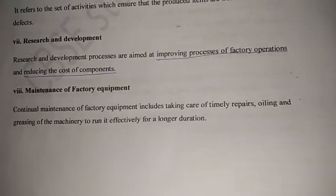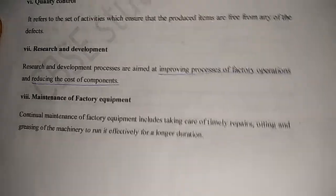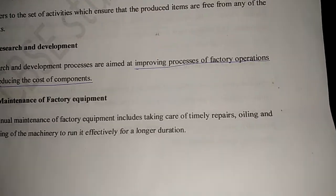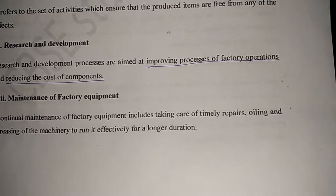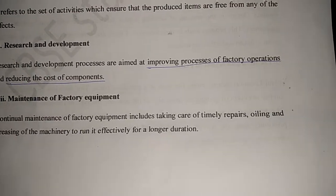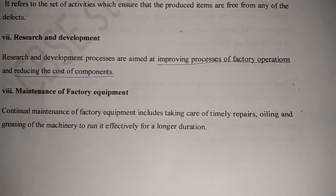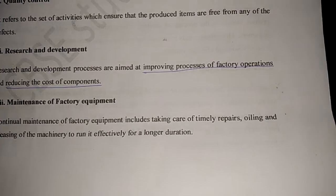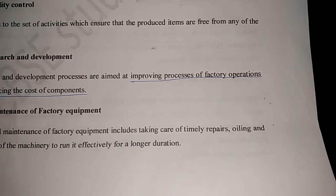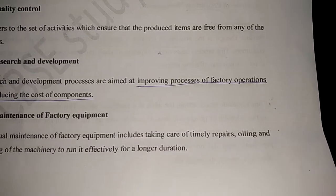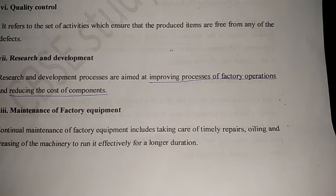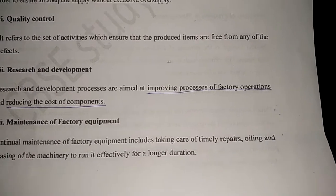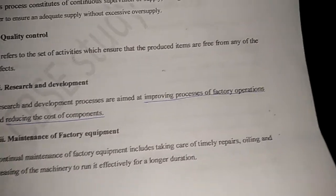Next is maintenance of factory equipment. Factory equipment like tools and machinery should be maintained well. They should be properly greased, repairs should be done properly and timely, and oiling should also be done properly and timely to run the equipment effectively for a longer period of time.